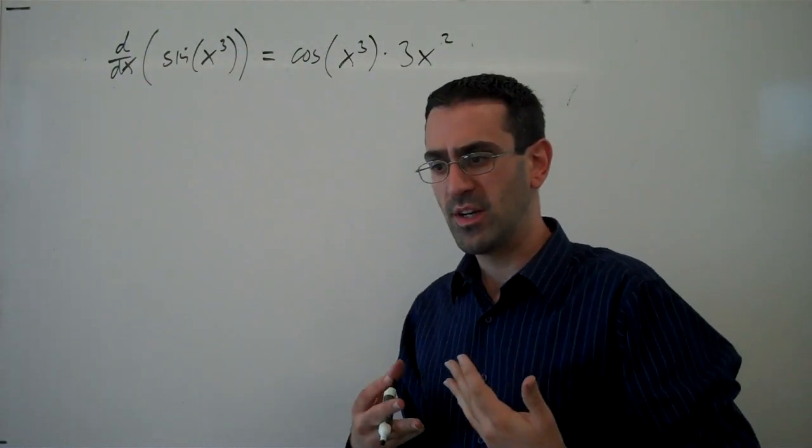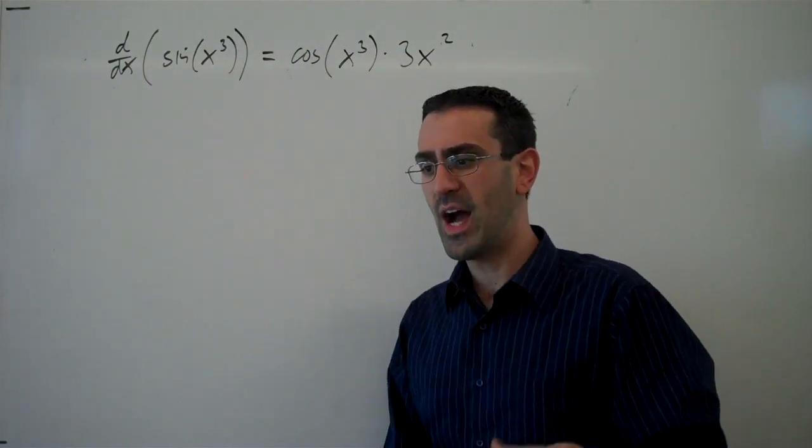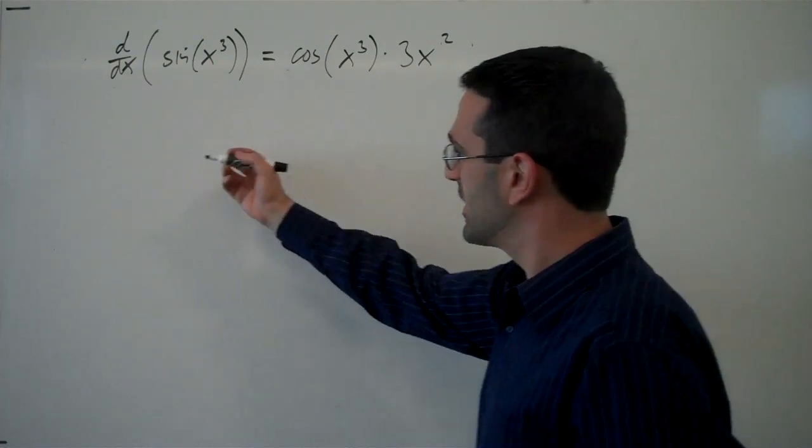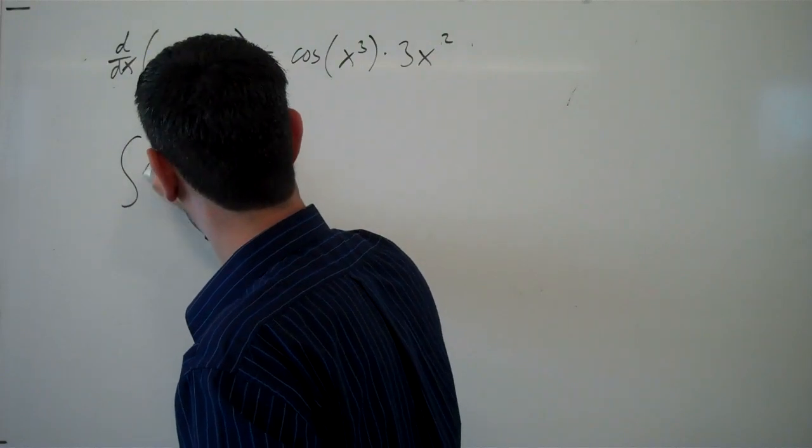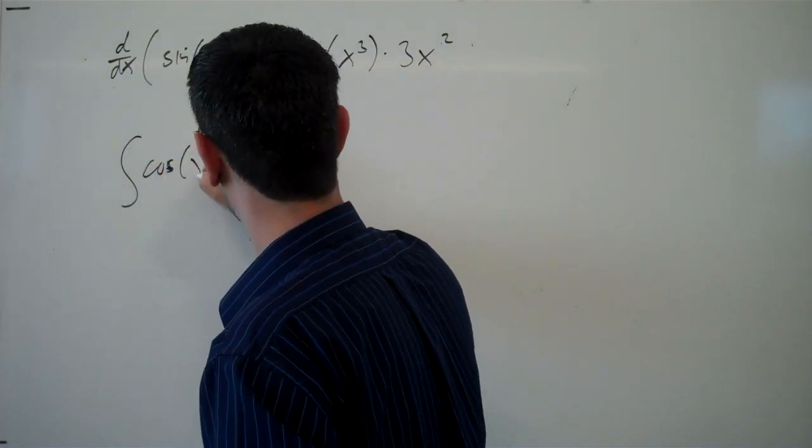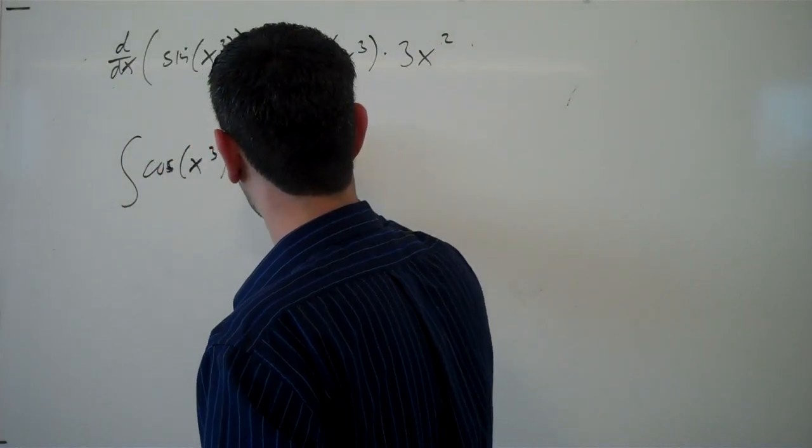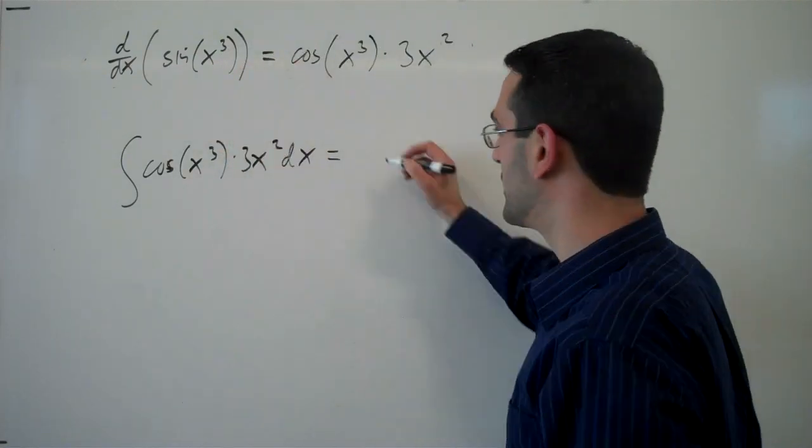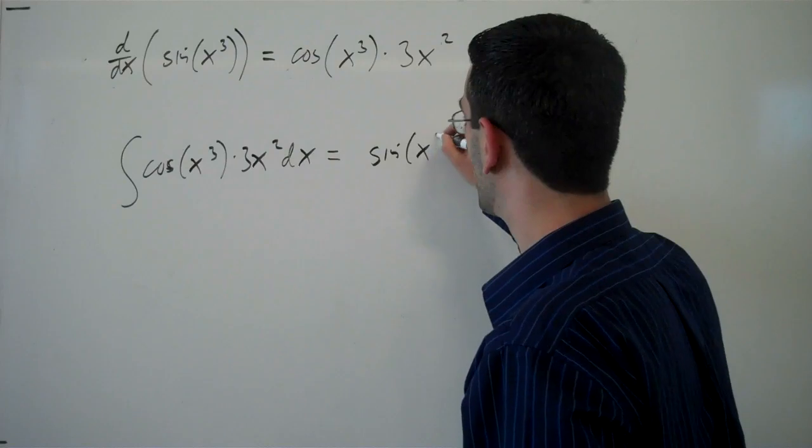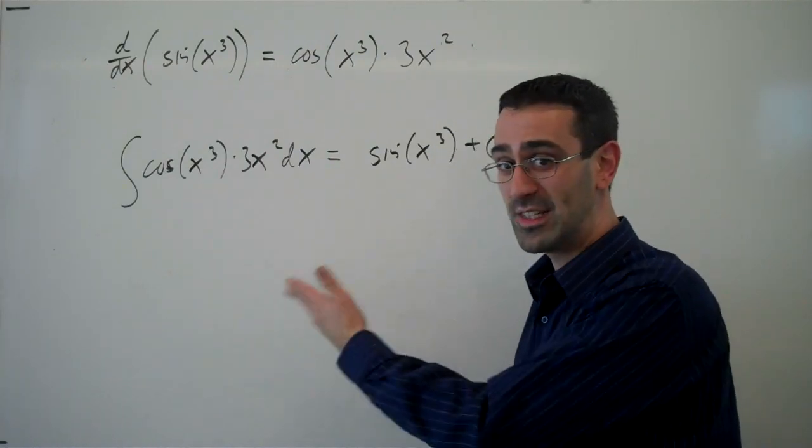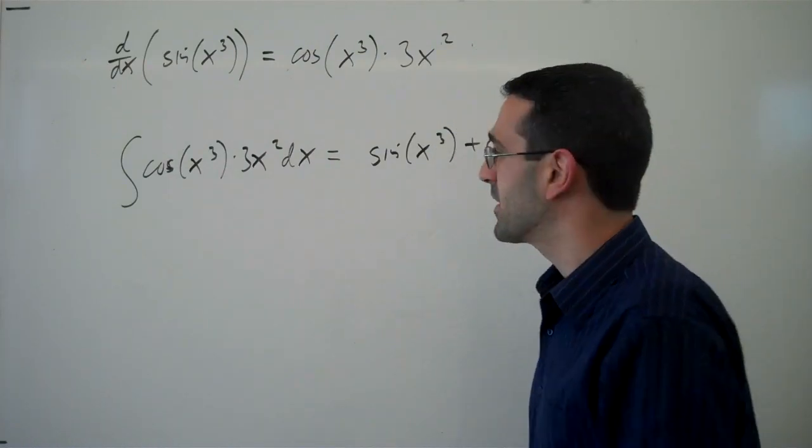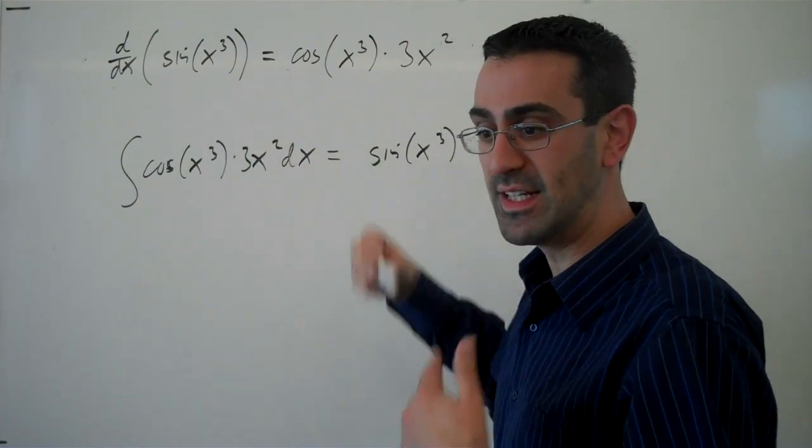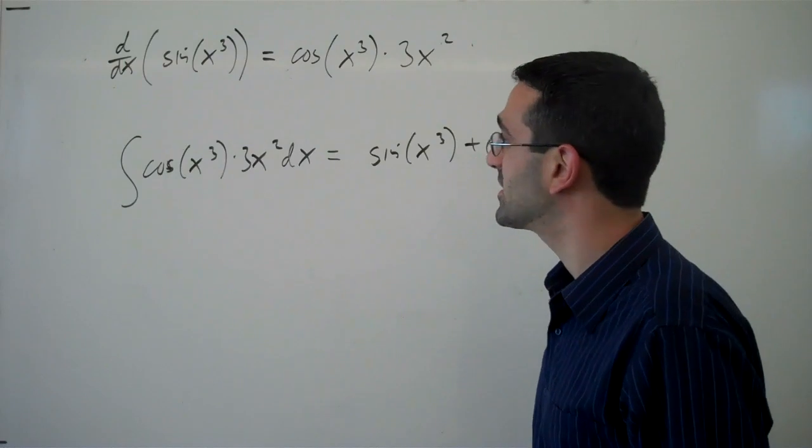When we are integrating, we might wonder how are we going to undo this chain rule. If we saw integral of cos(x³) times 3x² dx, we can see that the result is going to be sin(x³) plus c, but it's certainly not obvious. The difficulty here is that a piece of this is from the inside, the derivative of the inside function.